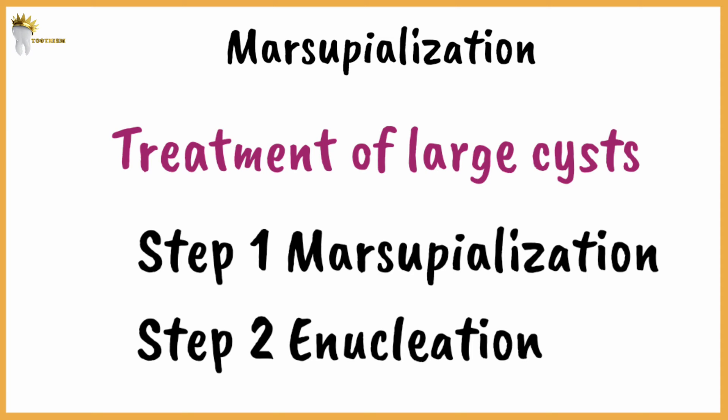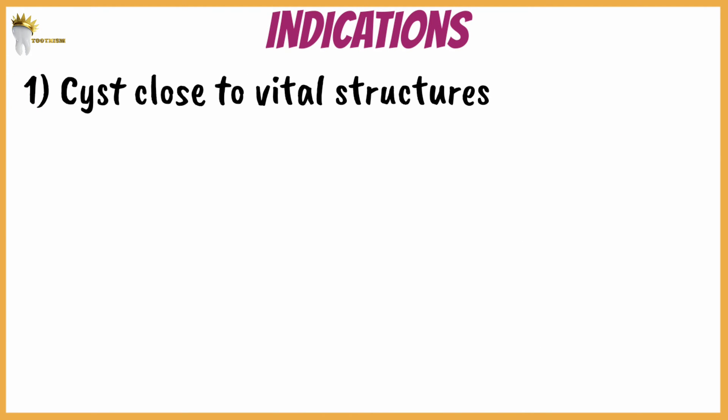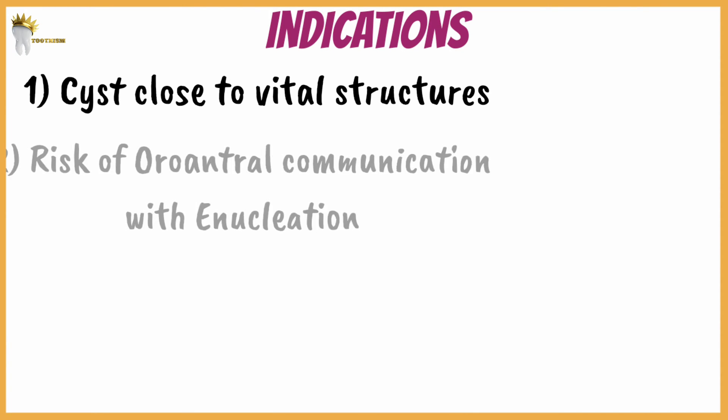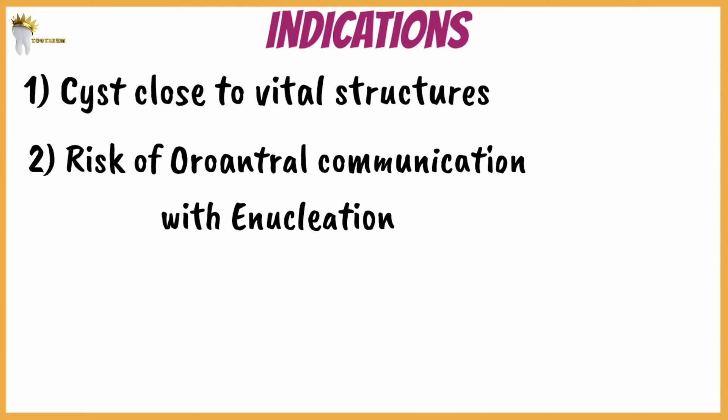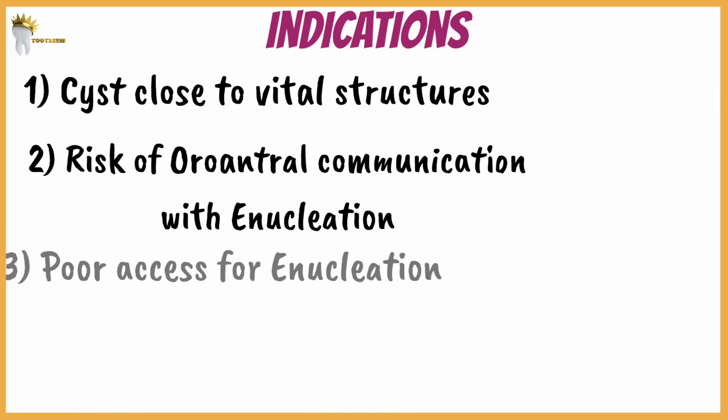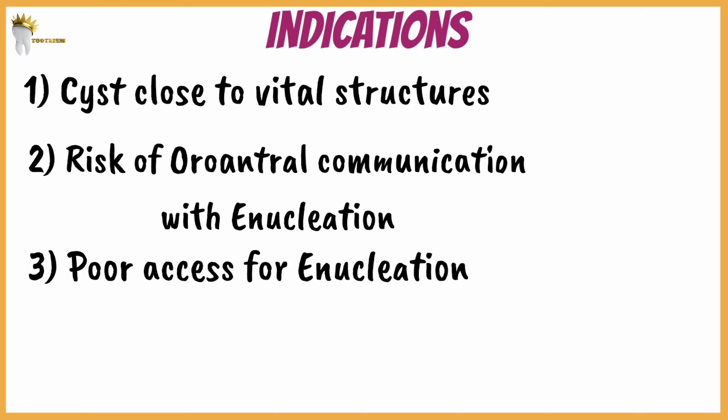Let's look at some indications. If a cyst is close to vital structures like the inferior alveolar nerve, or if enucleation would create an oronasal or oroantral fistula, or devitalize healthy teeth, then marsupialization is considered. As we have seen with enucleation, you need good access to remove the entire cyst in one piece — but if this is not possible and you attempt enucleation with poor access, portions of the cystic wall may be left behind, resulting in recurrence. So when access for enucleation is inadequate, marsupialization should be considered.